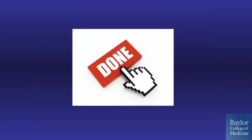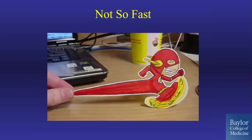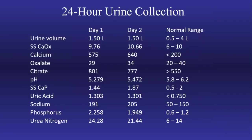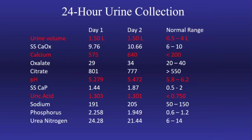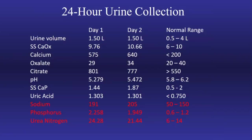Clearly this is an anatomic issue, and so this person has a reason to make stones. We figured that out, we treated it — we should be done, right? Not exactly. The 24-hour urine study demonstrates several abnormalities: low urine volume, severe hypercalciuria, high uric acid levels in the urine, and low urinary pH. On top of that, there are several dietary factors that are abnormal. So even in the patient who appears to have an anatomic explanation, there can also be metabolic issues at play.